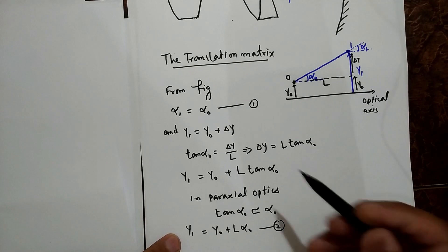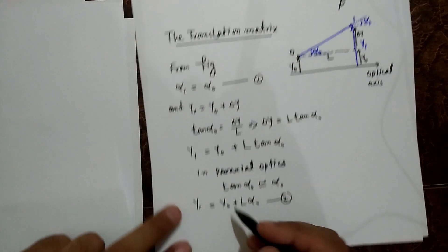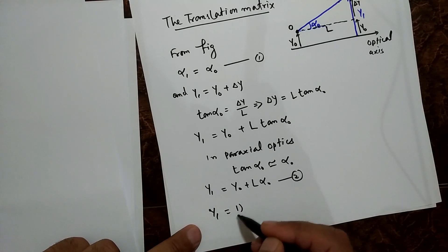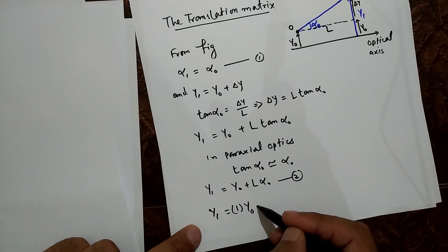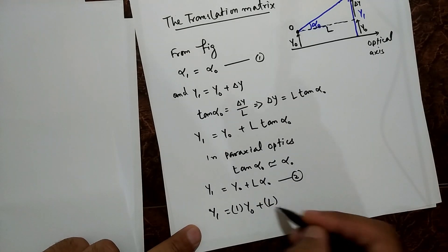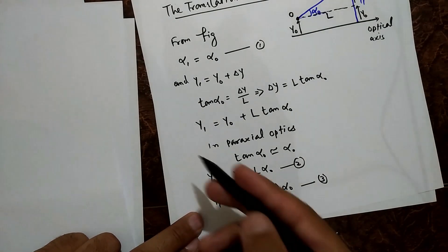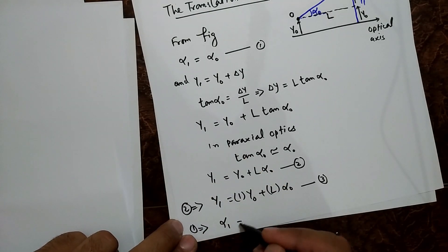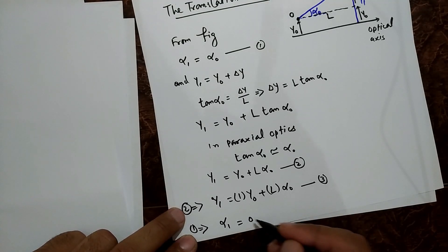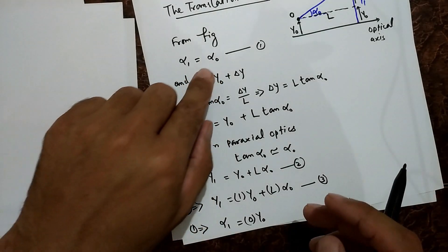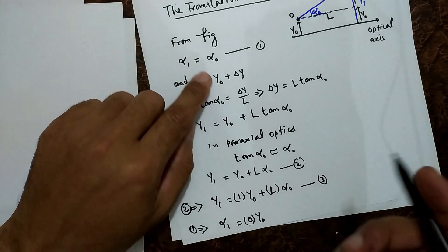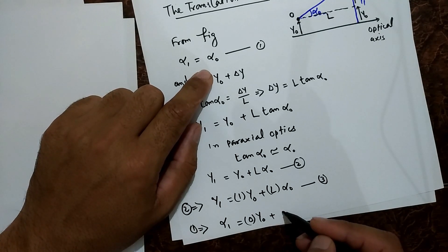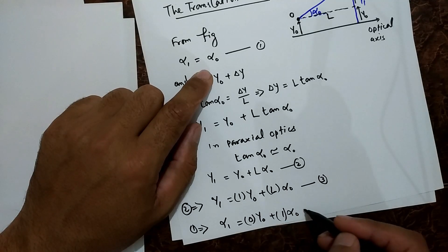We now have two equations for the final coordinates of the ray. We can write: y₁ = (1)y₀ + (L)α₀, and α₁ = (0)y₀ + (1)α₀. The zero coefficient on y₀ in the second equation means there is no contribution from y₀ to the angle.